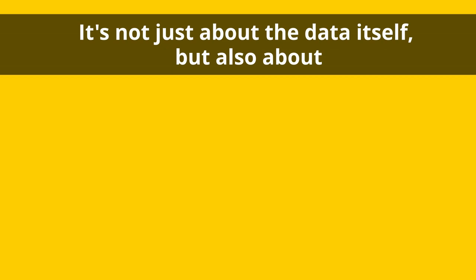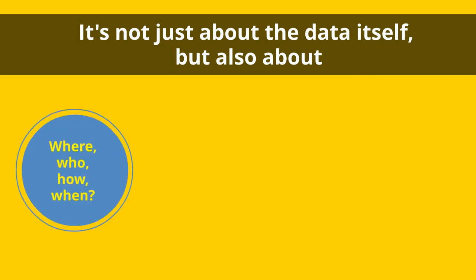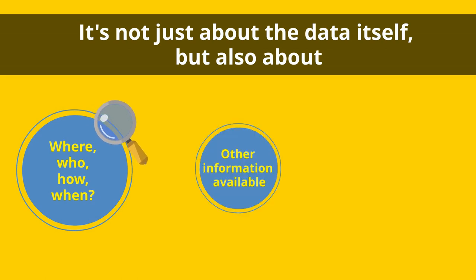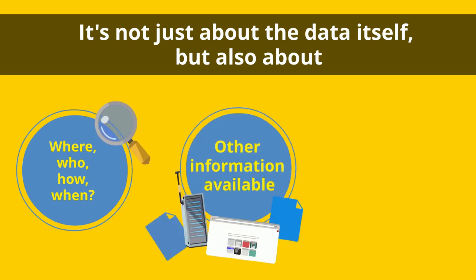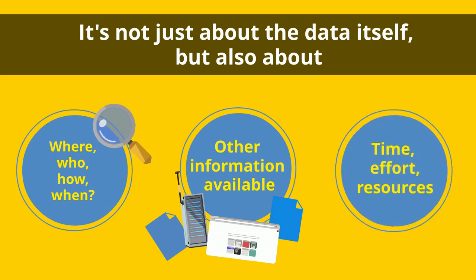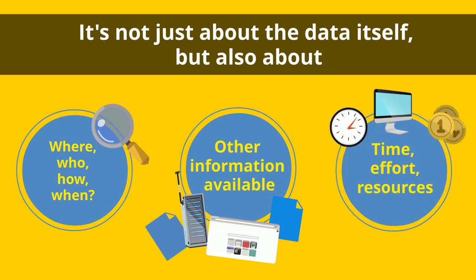So you can see that it's not just about the data itself, but also about the context of the data set — such as where the data was collected and the number of participants, what other information is available about the people in the data set, and the time, effort, and resources it would take for someone to identify an individual.